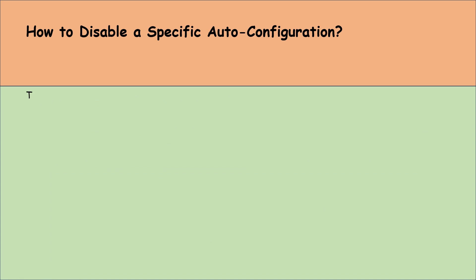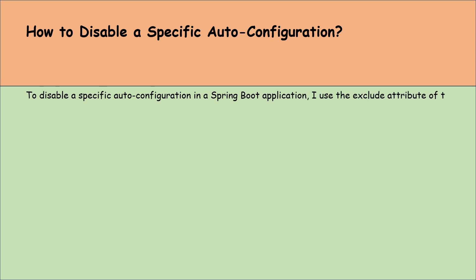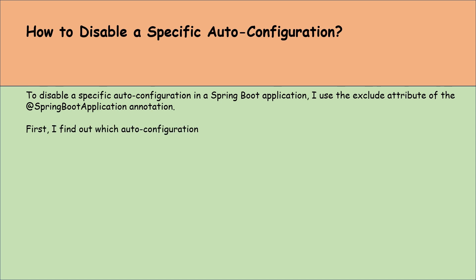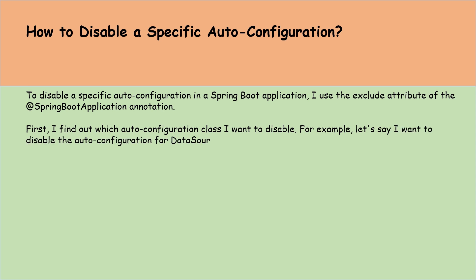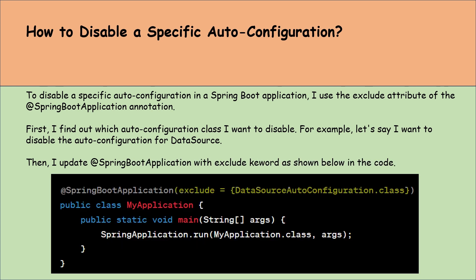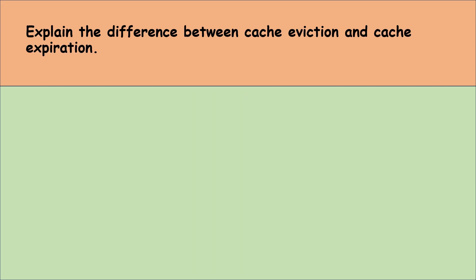Let's move to the next question: how to disable a specific auto-configuration in Spring Boot. To disable a specific auto-configuration, I use the exclude attribute of the @SpringBootApplication annotation. First, identify which auto-configuration class you want to disable — for example, if you want to disable the auto-configuration for DataSource, update the @SpringBootApplication annotation with the exclude keyword: exclude = {DataSourceAutoConfiguration.class}.